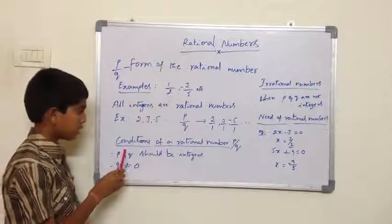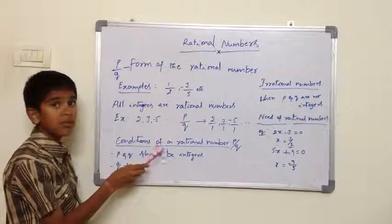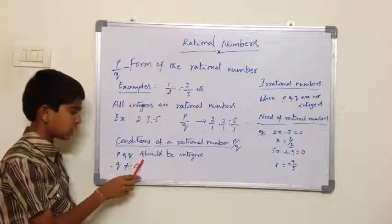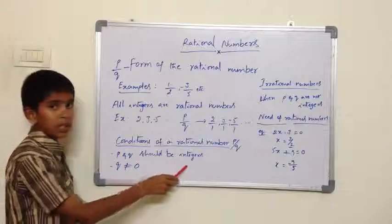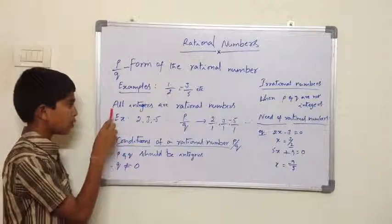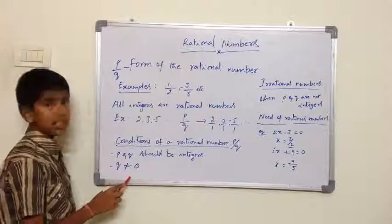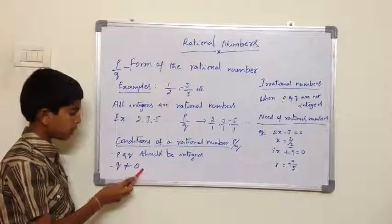Now we will see conditions necessary for rational numbers. First condition is P and Q should be integers. We saw this condition here. And second condition is Q should not be equal to 0.